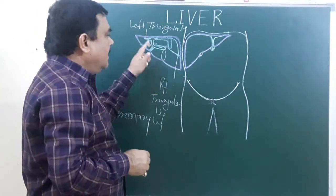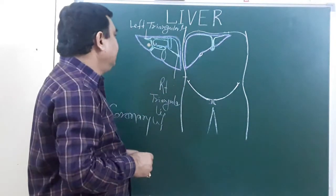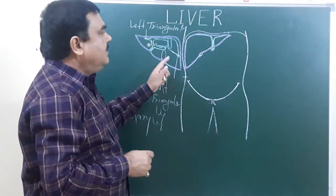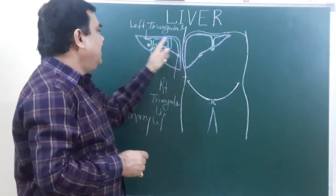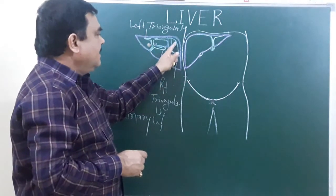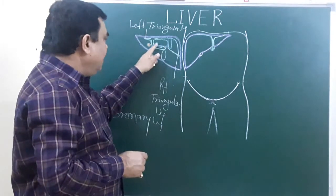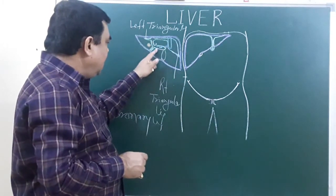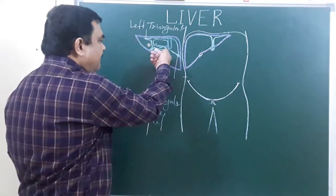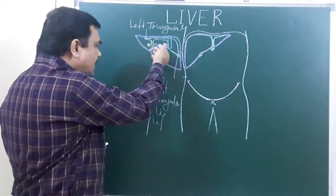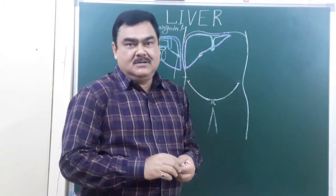So these are the bare areas present in relation to the liver, and the folds of the peritoneum form the ligaments: the falciform ligament, left triangular ligament, right triangular ligament, superior coronary ligament, inferior coronary ligament. And from here, the peritoneum reflects and forms the lesser omentum. So this is all about the peritoneum relation. Thank you.